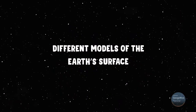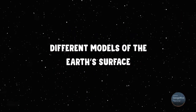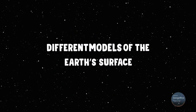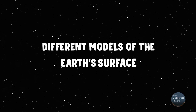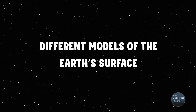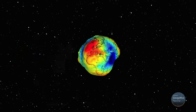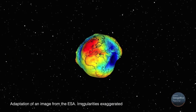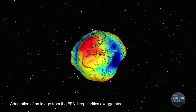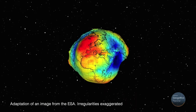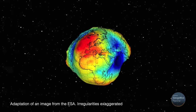The planet's surface is so complex that we cannot use it directly to make maps. So what could we use? Scientists have come up with different models of the Earth's surface for various purposes. One of them is the geoid, a fictitious surface that represents the force of gravity.